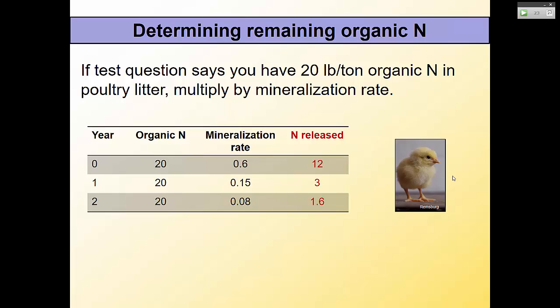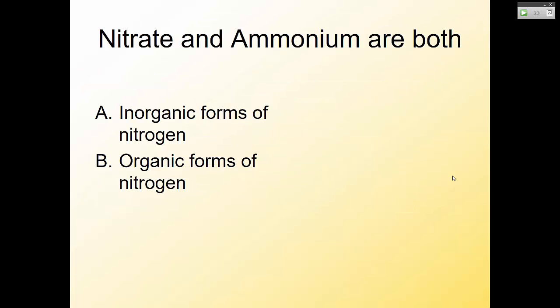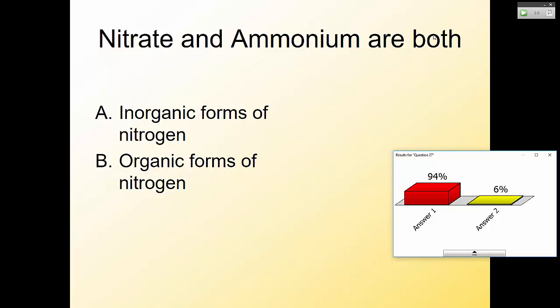Quiz: are nitrate and ammonium inorganic or organic forms of nitrogen? The answer is A — they are both inorganic, or mineral forms. An organic form would be amino acids — nitrogen that's locked up in organic structures.